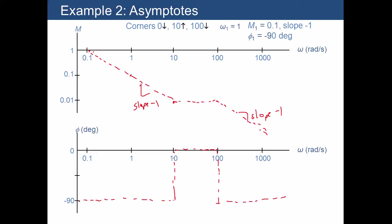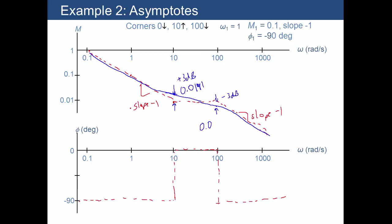Next we sketch in the actual values: we follow the asymptote, skirt slightly above it at the first corner and slightly below the asymptote at the second corner. For approximations, the first corner gives about plus 3 dB — that is 0.01 times the square root of 2, which gives about 0.0141. The second corner gives about minus 3 dB from the corner, so 0.01 divided by square root of 2, giving approximately 0.00707. Then we sketch the curves coming close to the asymptotes before heading back down.